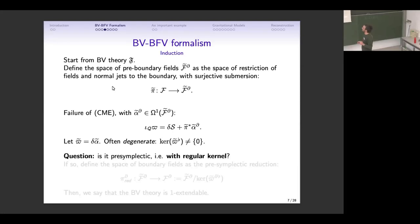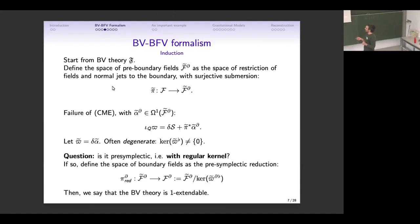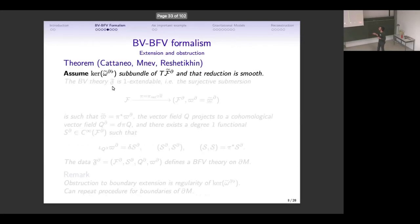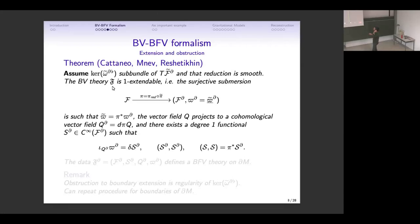The question here is whether this form is presymplectic — meaning, does it have a regular kernel? If so, we can do a reduction by this kernel and define a space of boundary fields F∂. There is this non-trivial step: you go from your bulk fields to something intermediate and then project down to your space of boundary fields. If this is the case, we say the theory is 'one-extendable,' and there is a result saying that the BV operator Q projects to a homological vector field Q∂, with a Hamiltonian functional satisfying the classical master equation. The classical master equation in the bulk is now spoiled by a boundary term.